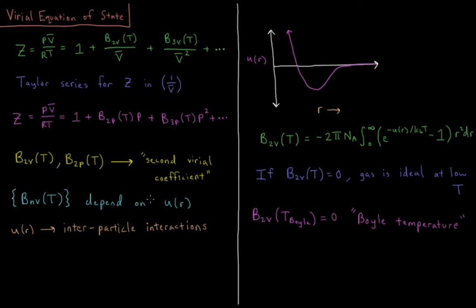So these virial coefficients depend on the interactions between the particles of the gas. So U of R being the potential energy as a function of the separation of these gas particles, inter-particle interactions, the change in the potential energy based off of how far these particles are apart.